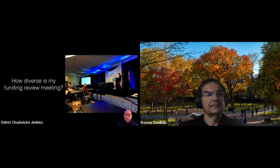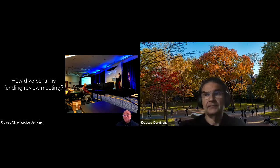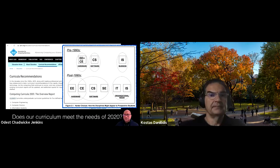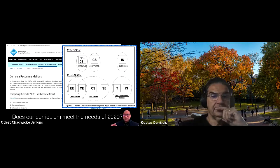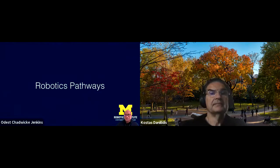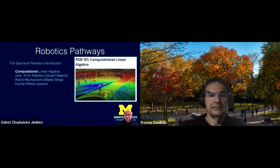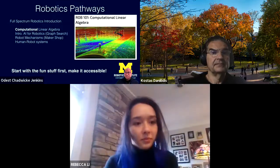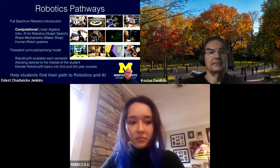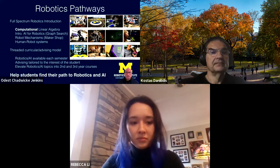There were a few things I forgot to mention: how diverse is your funding review meeting? You've got to be able to invest in people. Are you really investing in Black people who can succeed in the field? I would say our curriculum needs updating. When we look at the curriculum we offer, it still has a 1990s mindset — electrical engineering, computer science, and computer engineering in the middle. Does that give people a pathway into robotics? This model was built before AI became big, before big technology. Just as a highlight, we're trying to do something about this at Michigan — putting in a new undergraduate program for robotics. The basics of this: start with linear algebra instead of calculus, start with the fun stuff and make it accessible, and provide a threaded curricular model that allows students to find their path into AI and robotics.